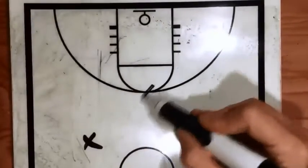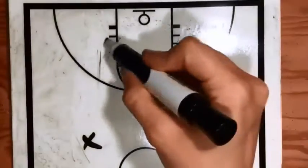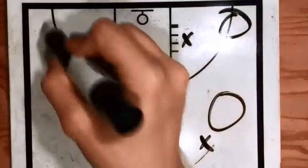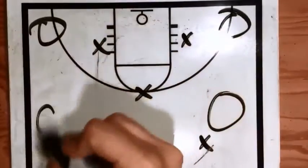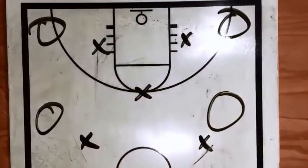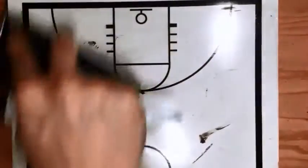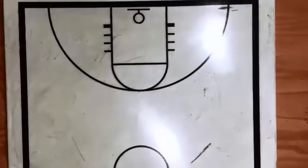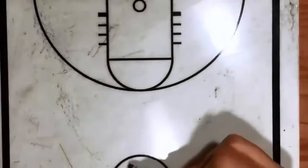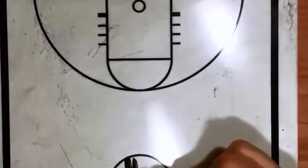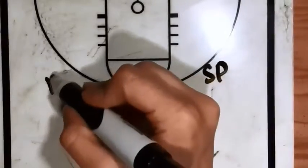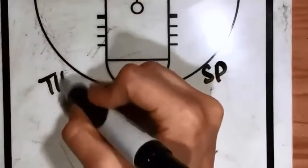A lot of times what you'll see a coach do is set the defense up in a certain formation, and then circle areas where they want you to trap in. Other times, to avoid confusion altogether, they'll use initials.